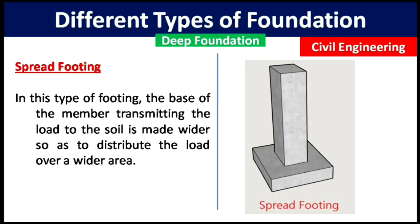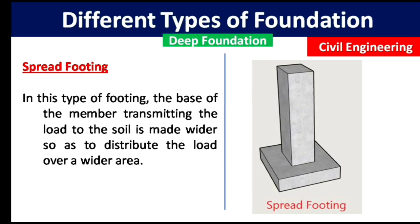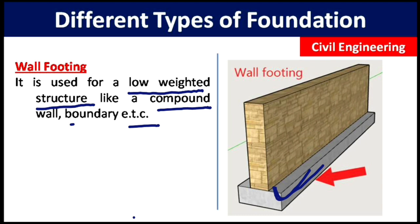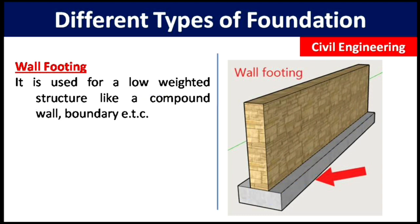The next type of footing is wall footing. This type of footing is generally constructed for walls and is used for low-weight structures like compound walls and boundary walls. It is similar to spread footing, but its length is greater than its width.